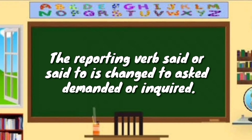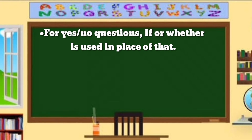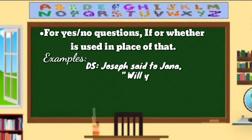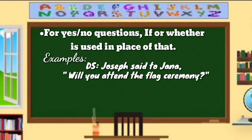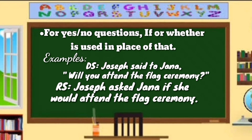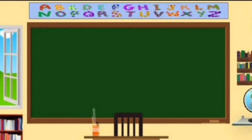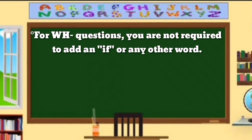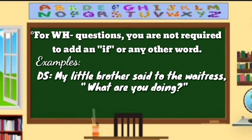Here is the conversion of interrogative and imperative direct speech. The reporting verb 'said' or 'said to' is changed to 'asked,' 'demanded,' or 'inquired.' For yes/no questions, 'if' or 'whether' is used in place of 'that.' For example — DS: Joseph said to Jana, 'Will you attend the flag ceremony?' For wh-questions, you are not required to add 'if' or any other word. For example — DS: My little brother said to his witness, 'What are you doing?'